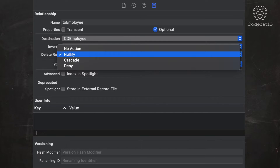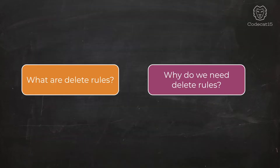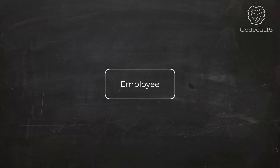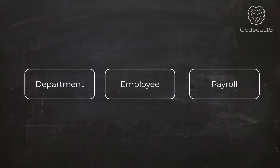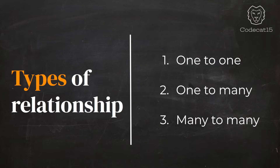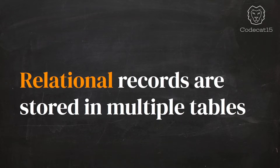There are 4 types of delete rules and each type plays an important role. Before I start explaining these rules, it's very important to know two things: what are delete rules, and why do we need them. In Core Data, you can have one entity or more than one entity. Many times there are relations between two entities — either one-to-one, one-to-many, or many-to-many, depending upon your project requirement. When you have multiple entities, you can split the record of one entity across multiple tables, and that's the whole idea behind database relationships.